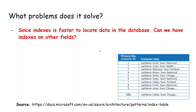So what problems does the index table pattern solve? Since indexes make it faster to locate data, can we have more indexes on other fields? Each table has a primary key and we can use that to retrieve data based on the customer ID. But if we want to query data based on a customer's last name, location, or town, then we need to create another index in our database to retrieve data even faster.